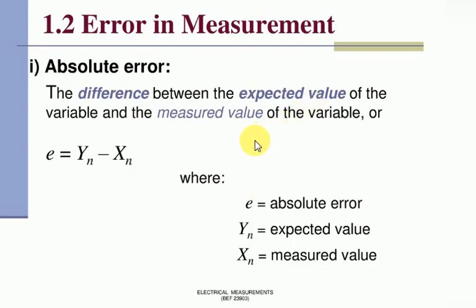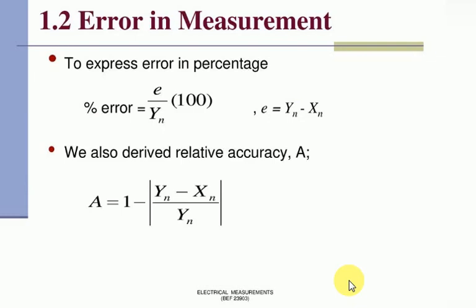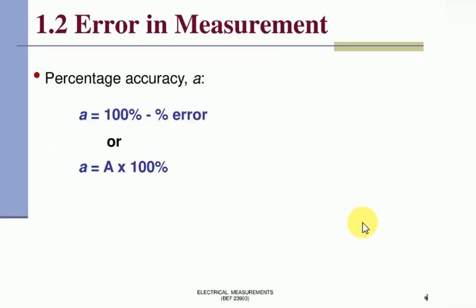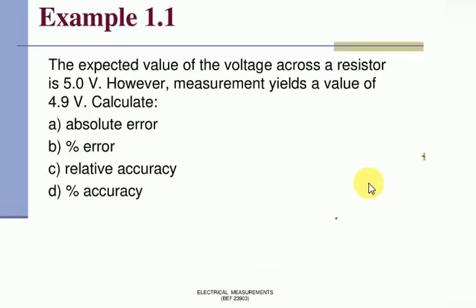The expected value and measured value - that difference is the absolute error. Absolute error equals yn minus xn, where yn means expected value and xn means measured value. Error in measurement can be shown in percentage - percentage error, percentage accuracy.